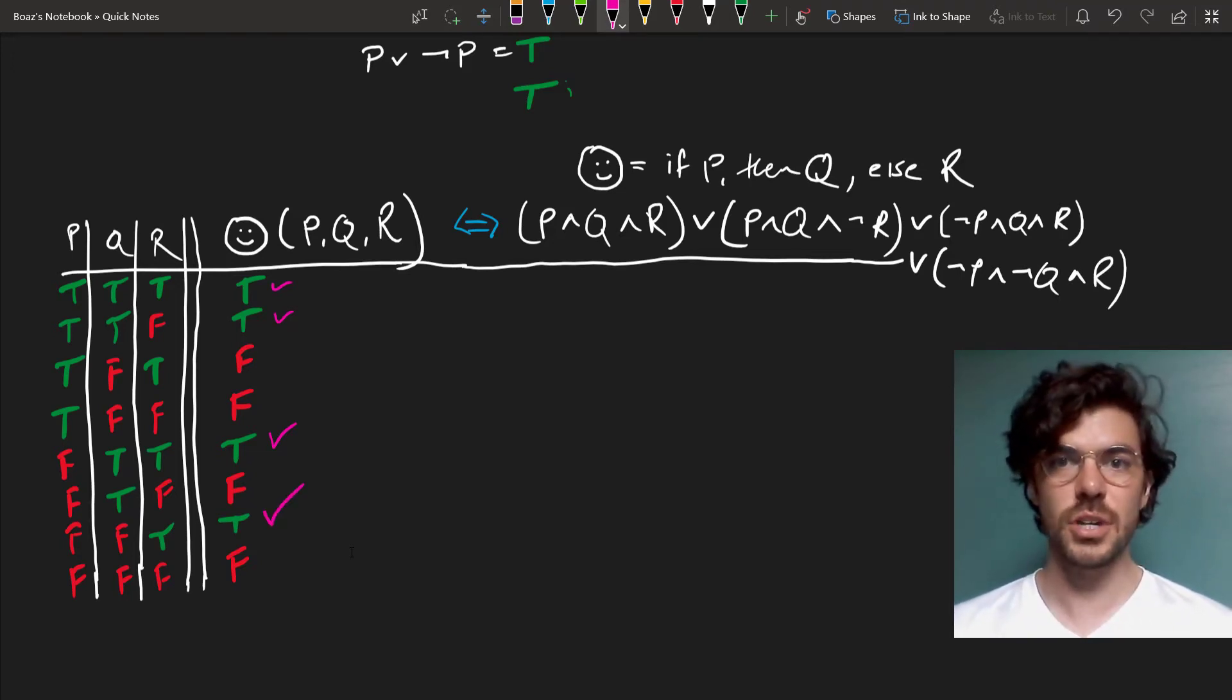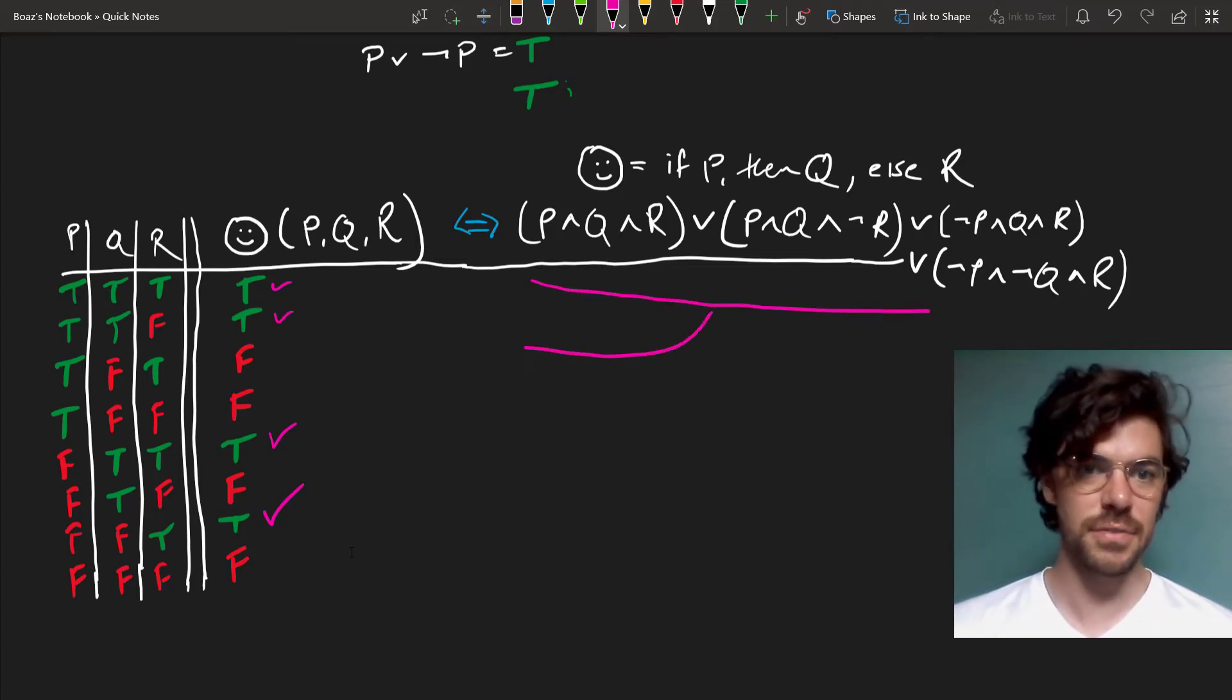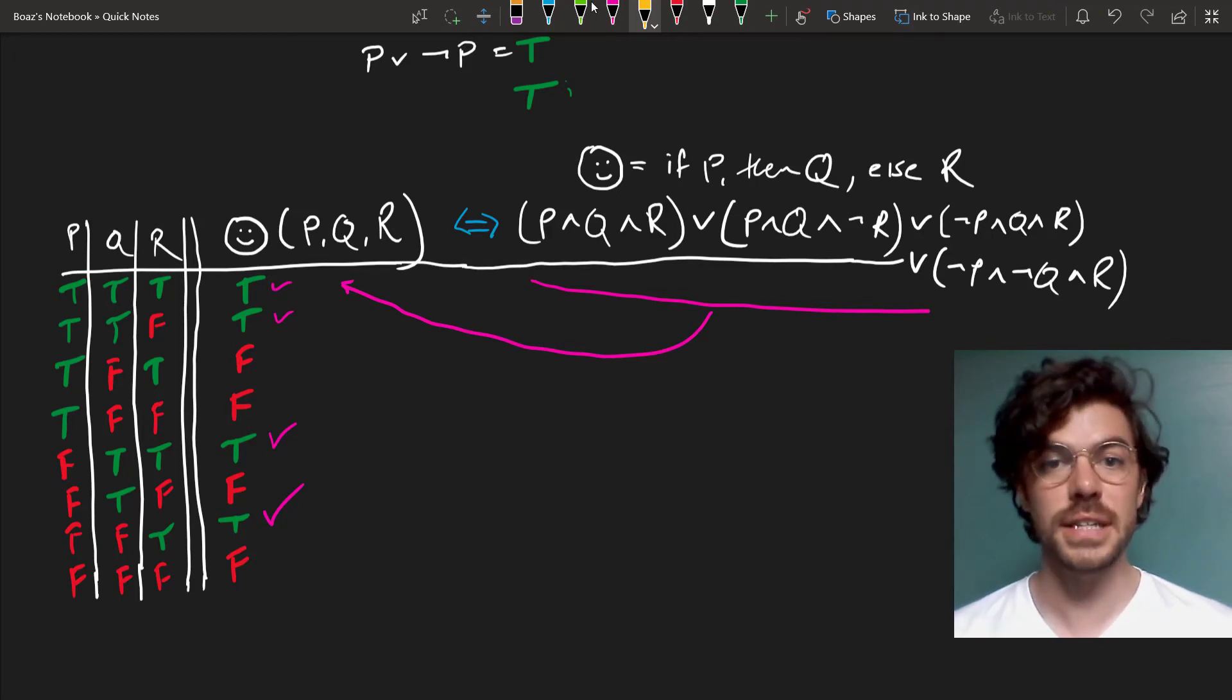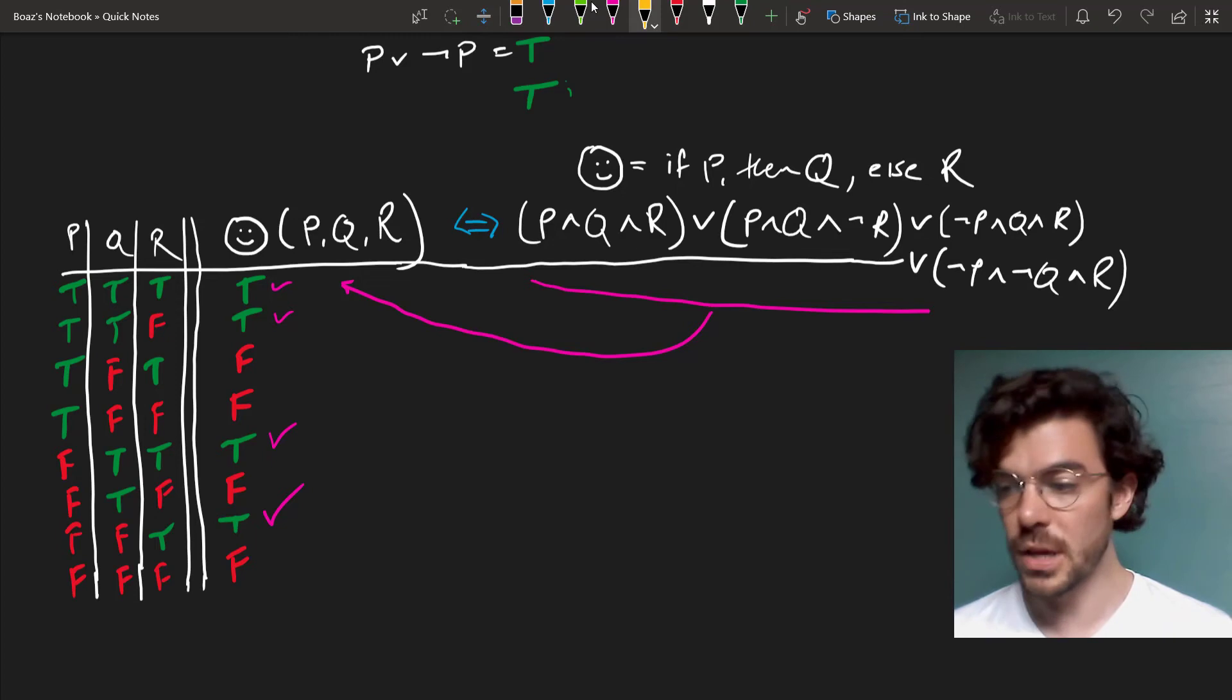So this disjunctive string on this side is itself just equivalent with our smiley face operator over here. And in general we can construct any operator of any arity we like using this method.